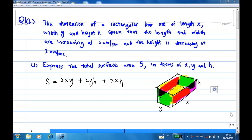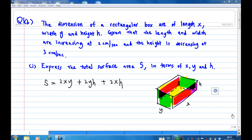This is an application of partial derivative. The dimensions of a rectangular box are of length x, width y, and height h. Given that the length and width are increasing at 2 cm per second, and the height is decreasing at 3 cm per second, express the total surface area in terms of x, y, and h.